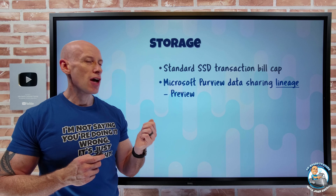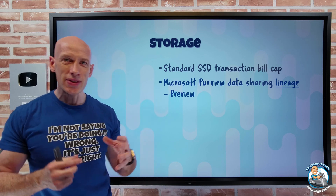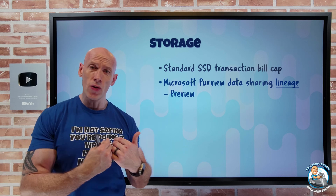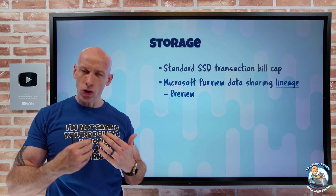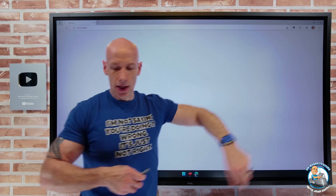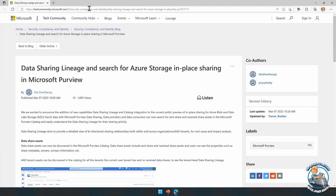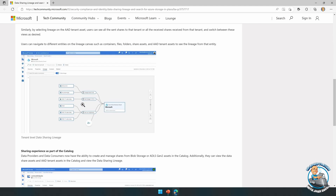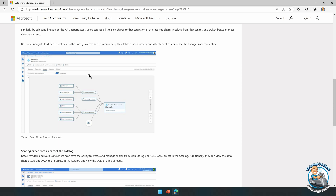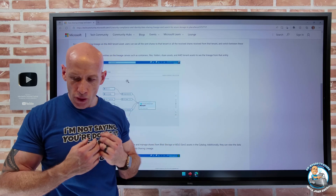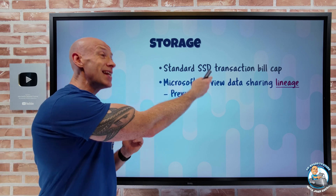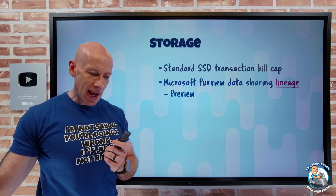Microsoft Purview now has data sharing lineage. One of the things Microsoft Purview does is in-place data sharing. For Blob and Data Lake, I can share information from my storage account with other entities — I have full control over that, and it's all in place, not copying the data. What this lineage adds is, for data officers in my organization, I can now get a graphical visual view of what is happening. I'll be able to see the data sources being shared with me, that my organization is taking advantage of from other people, but also what I'm sharing with other companies. The in-place sharing and this lineage are both in preview.